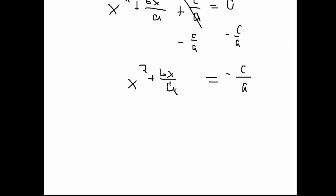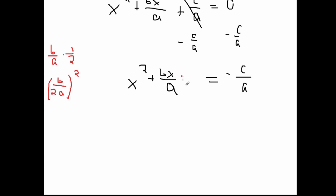This next part is kind of tricky. What we have to do is find a perfect square for this term, because then we can factor it out and make it a lot simpler to solve. To find the perfect square, we take the middle coefficient b over a, divide it by 2 — which is the same as multiplying by one half — giving us b over 2a, and then we square the whole thing. We add that to the left side, which will create a perfect square, and because we added it to the left side, we have to add b over 2a squared to the right side also.